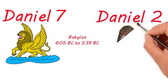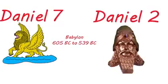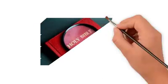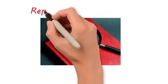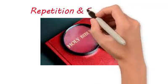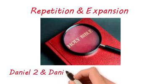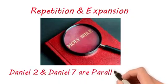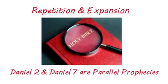By the way, Daniel 2 and Daniel 7 are parallel prophecies. God uses the principles of repetition and expansion in parallel prophecies. In other words, God repeats prophecies using different symbols, and as He does, He expands on the prophecy, giving us the necessary clues and additional information He wants us to know in order to understand the prophecy.